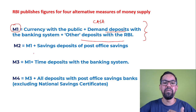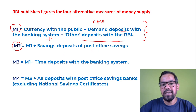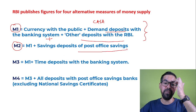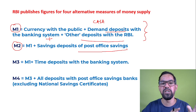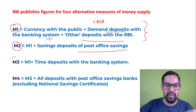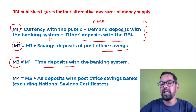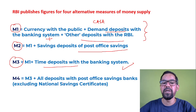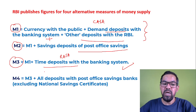M2 generally includes all components of M1 plus savings deposits with the post office. M3 is M1 plus term deposits with the banking system. Term deposits include recurring deposits and fixed deposit accounts, which are generally known as term deposits.